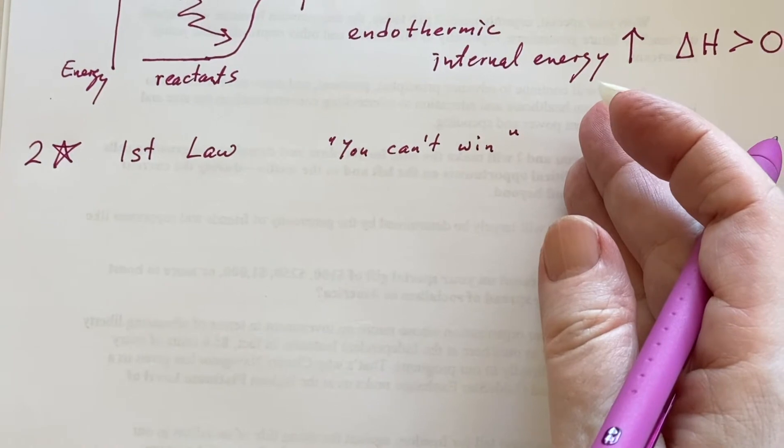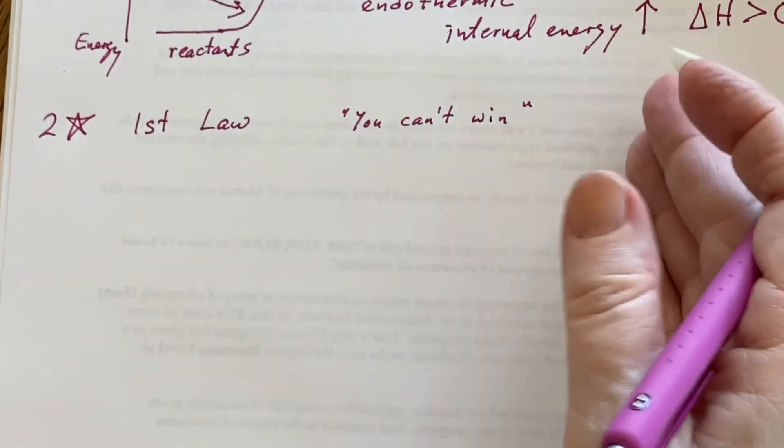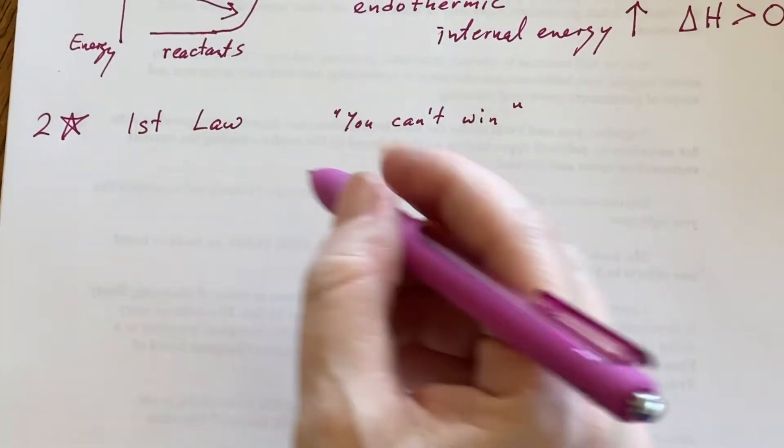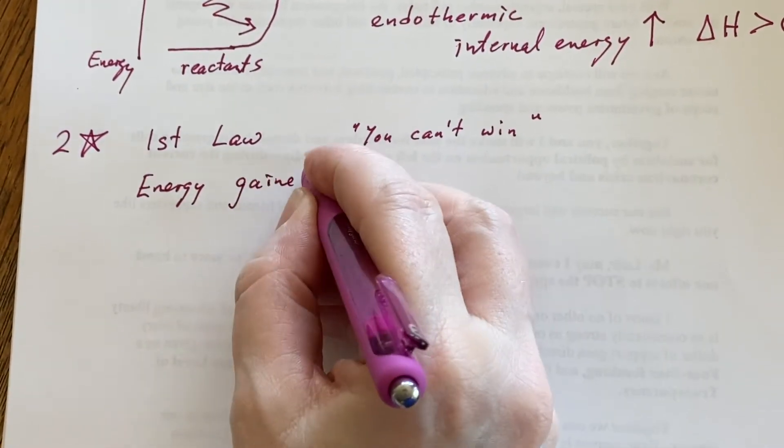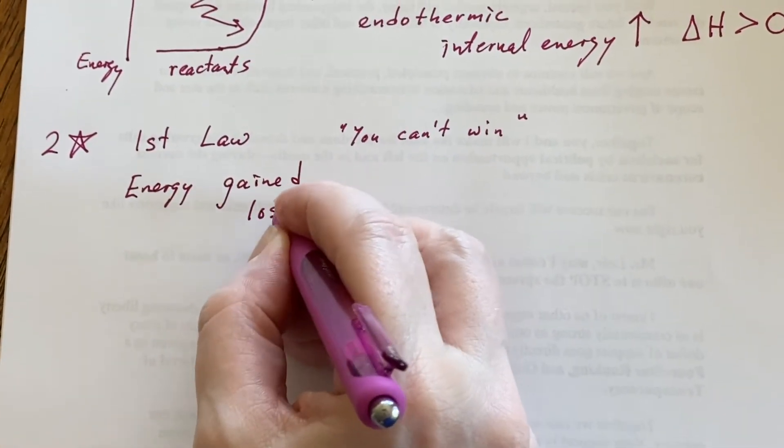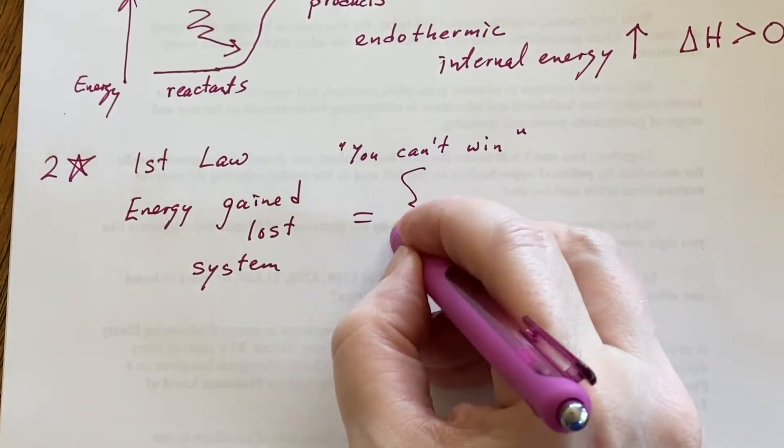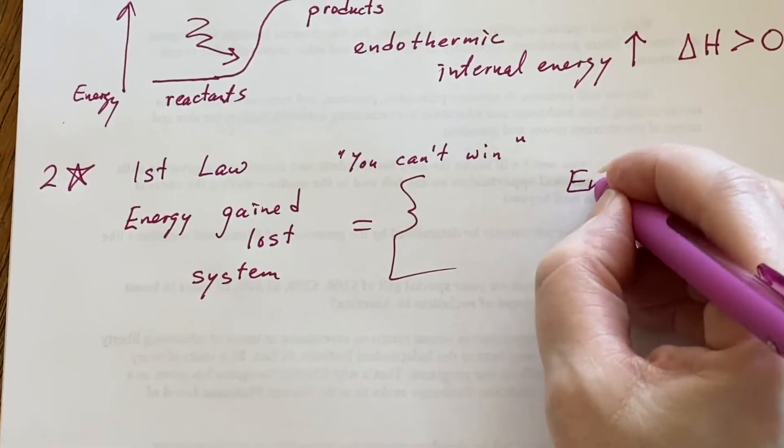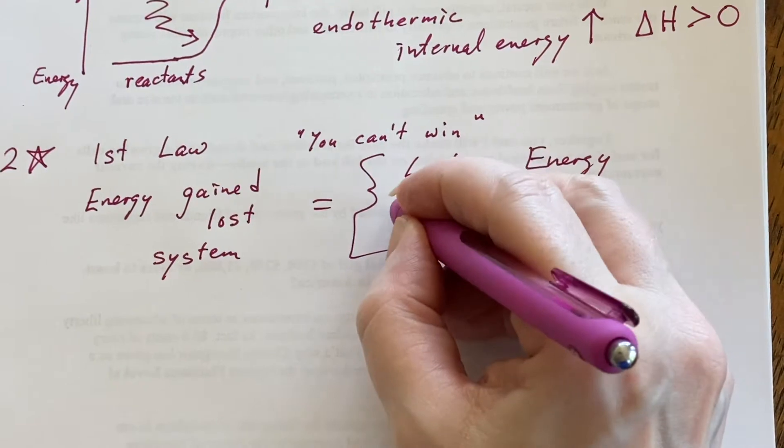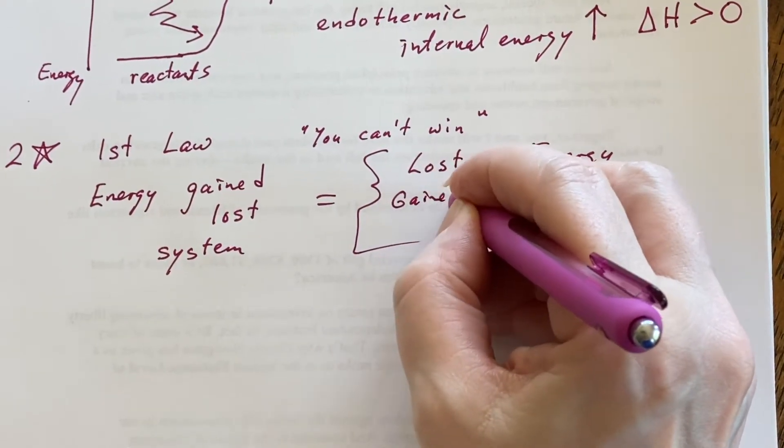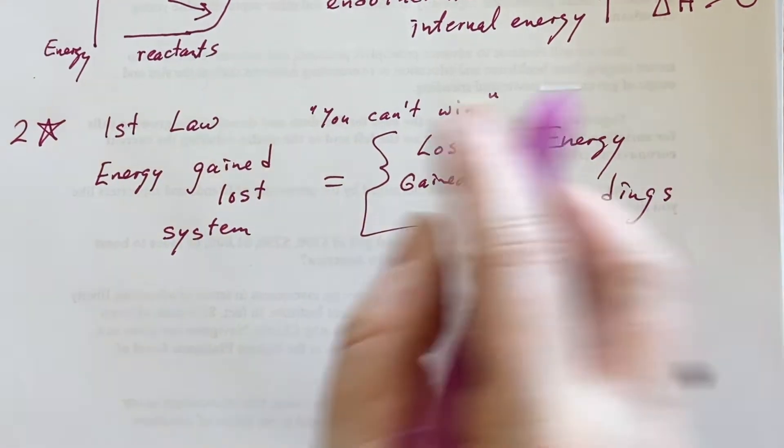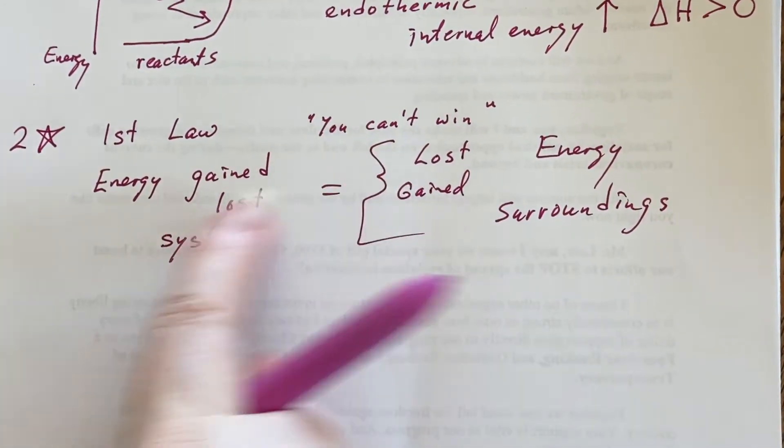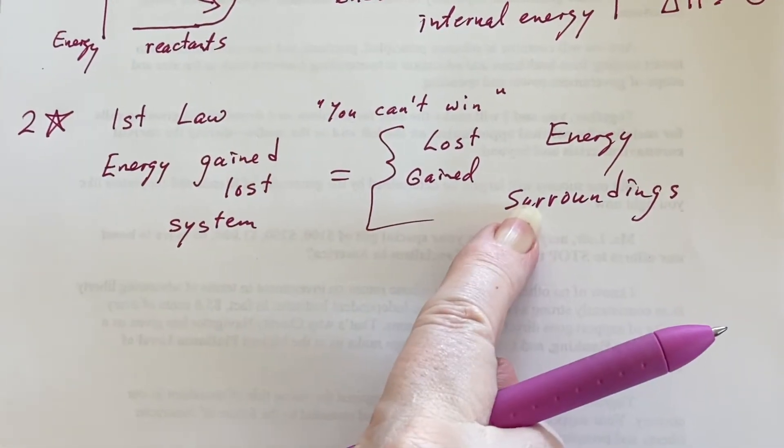This is what engineers call the first law of thermodynamics because any energy that was gained or lost by the system is going to be equal to the energy that was lost or gained by the surroundings. That's why it was called you can't win, because it's a zero-sum game.